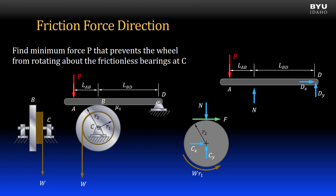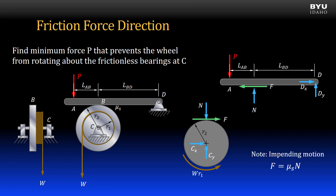Next I draw the free body diagram for bar ABD. I show the applied force P and the support reactions at D. The normal force is shown perpendicular to the bar, equal and opposite as shown on the wheel. The friction force must also be shown on the bar in a direction equal and opposite to that shown on the wheel. Since there is impending motion at the wheel, the friction force equals the static friction force mu sub s times N.